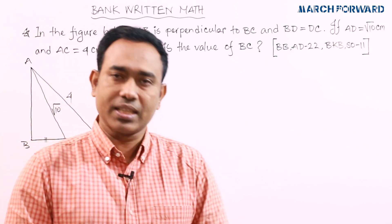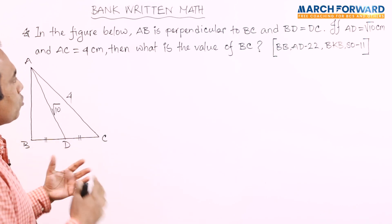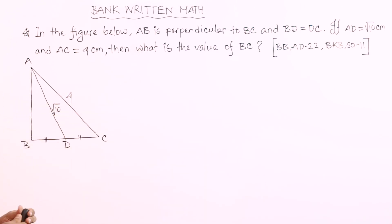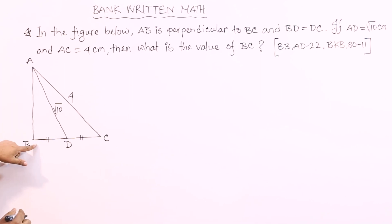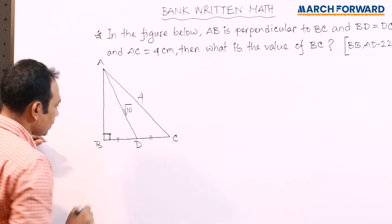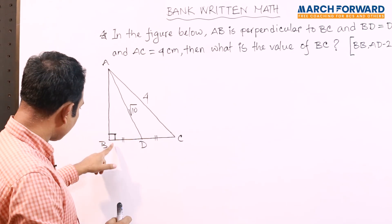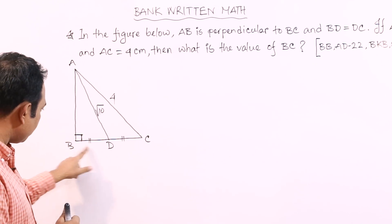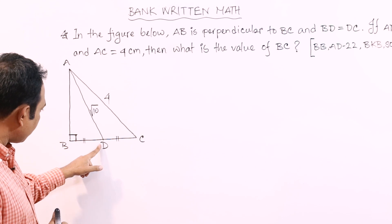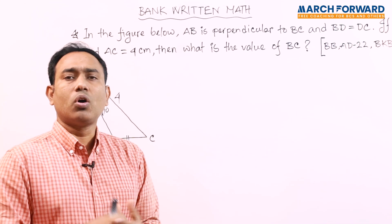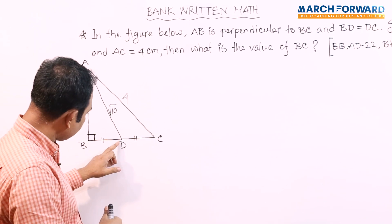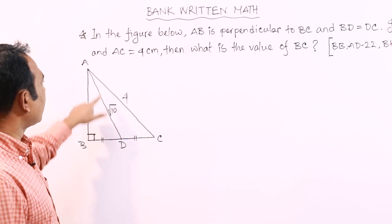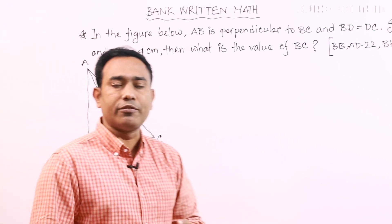What is the value of BC? AB and BC are perpendicular, meaning 90 degrees. BD equals DC, which means D is the midpoint. AD equals square root of 10 cm and AC equals 4 cm. Then what is the value of BC?